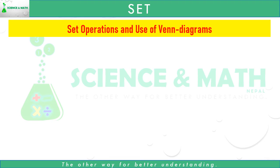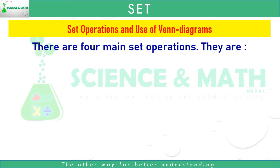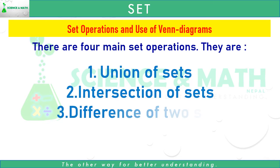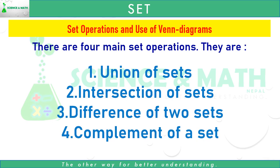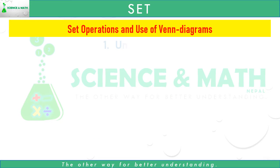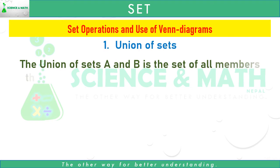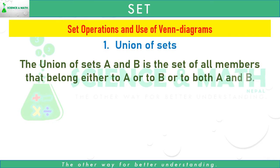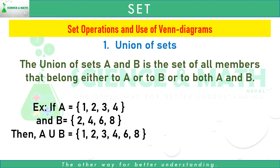Now let's learn about set operations. There are 4 main set operations: union of sets, intersection of sets, difference of two sets, and complement of a set. First, let's see union of sets. The union of sets A and B is the set of all members that belong either to A or to B or to both A and B. For example, if A equals the set of 1, 2, 3, 4 and B equals the set of 2, 4, 6, 8, then A union B equals {1, 2, 3, 4, 6, 8}.